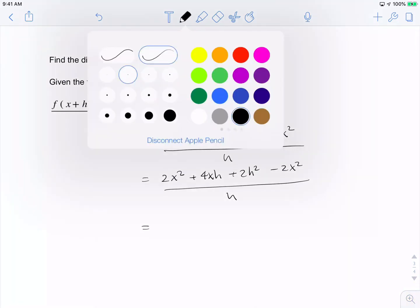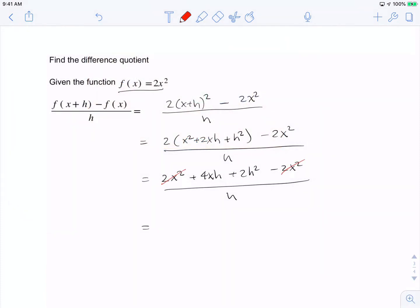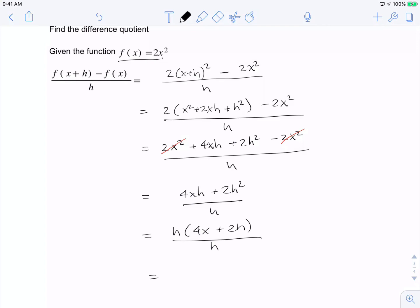This cleans up to (2x² + 4xh + 2h² - 2x²)/h. The 2x² terms cancel, giving us (4xh + 2h²)/h. We factor out an h to get h(4x + 2h)/h. The h's cancel, and we end up with 4x + 2h. That is our answer. This is an example of the difference quotient. I strongly suggest you practice this. All the best.